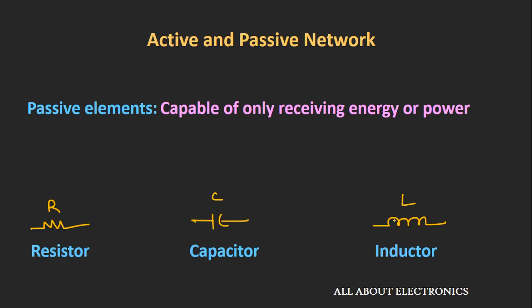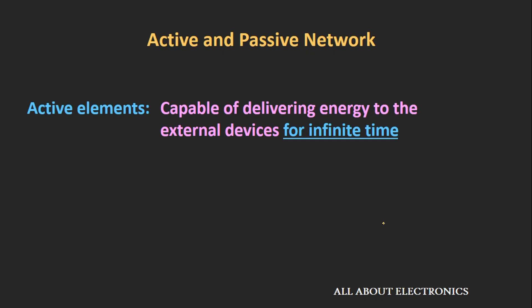The resistor dissipates received energy in the form of heat, while the capacitor and the inductor store a finite amount of energy and are later able to deliver this energy for a finite amount of time. Unlike active elements, which are capable of delivering energy for an infinite time. So, a network containing active elements like voltage source and current source is called an active network, while a network containing resistor, capacitor, and inductor is called a passive network.